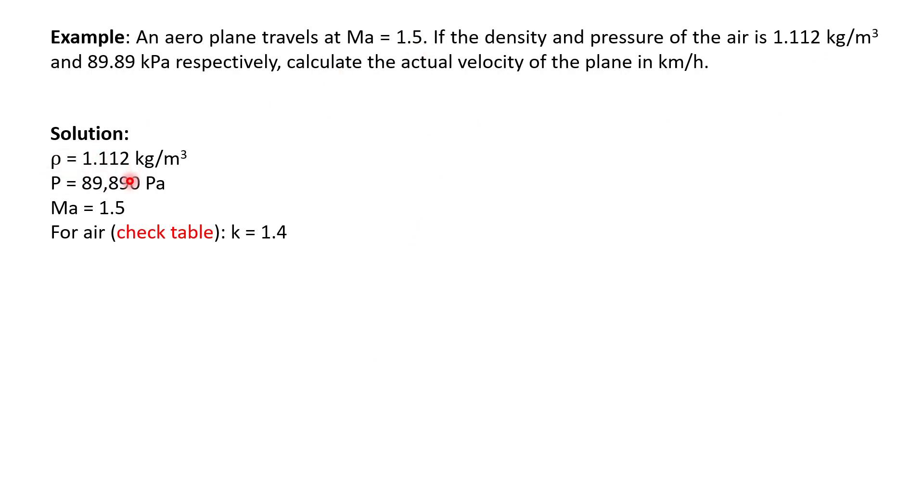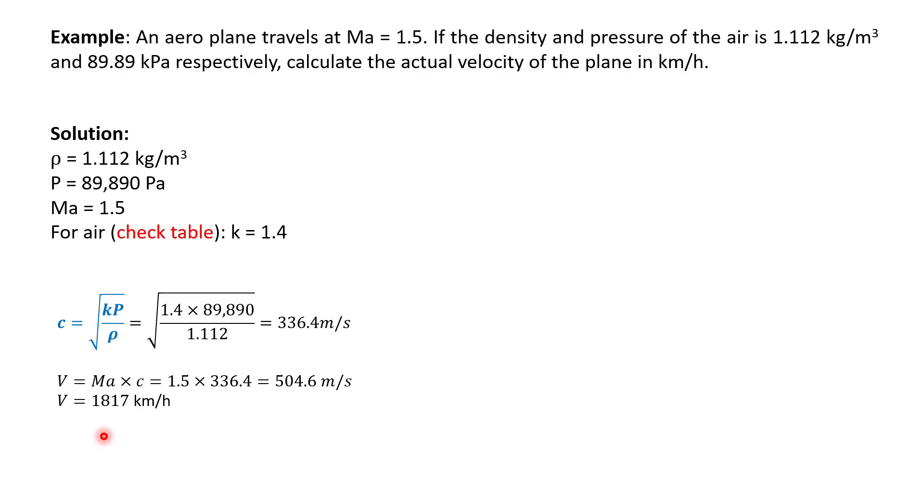We're given density, given pressure, given Mach number. And for air, remember, the k value is 1.4. So we can then put all of the terms in the equation for the speed of sound. We find out, finally, the velocity is 1817 kilometers per hour.